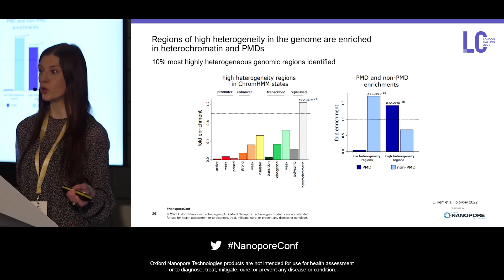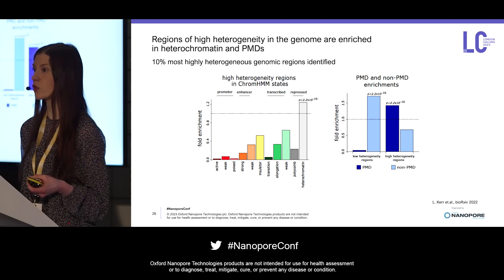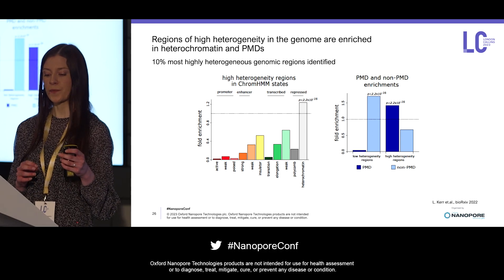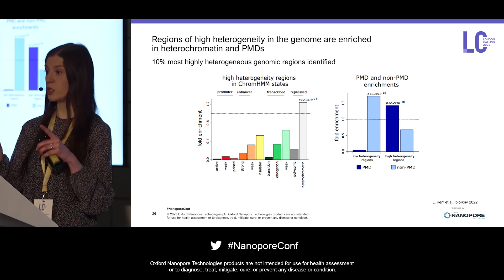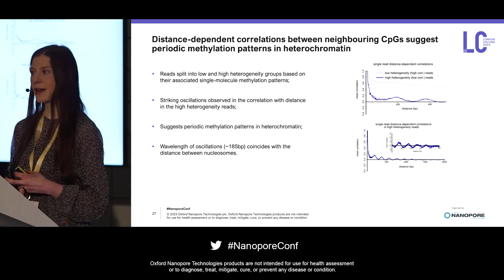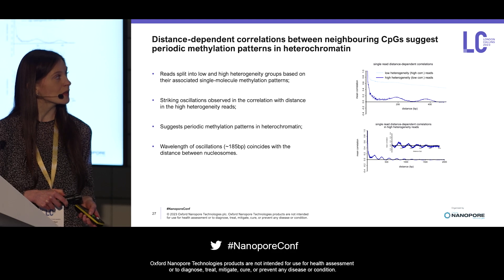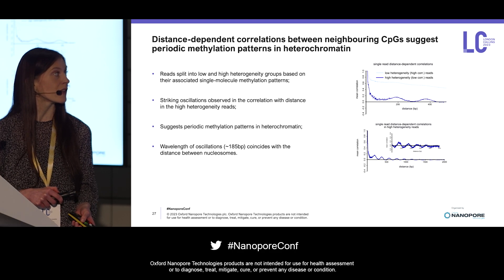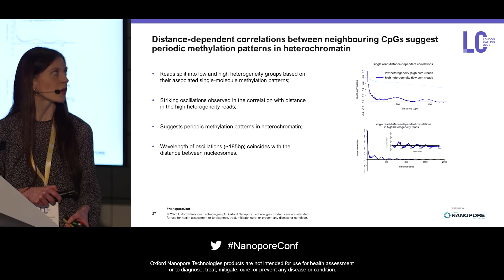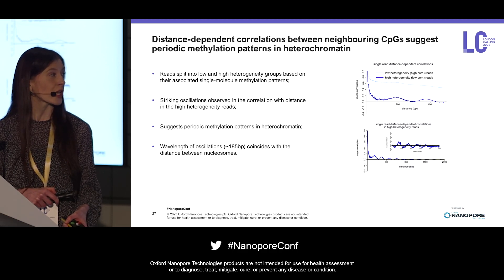I now wanted to know what single molecule patterns actually look like, particularly in these heterochromatin partially methylated domains. I looked at how the correlation between CpGs varied based on the distance between CpGs. Using a mathematical model to split reads into a low heterogeneity group (light blue) and a high heterogeneity group (dark blue), I calculated the distance-dependent correlation for each group. Within the high heterogeneity reads, I see really quite striking oscillations — the correlation oscillates with the distance between CpG sites.